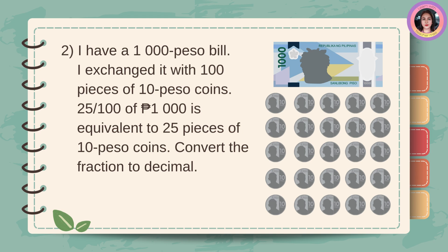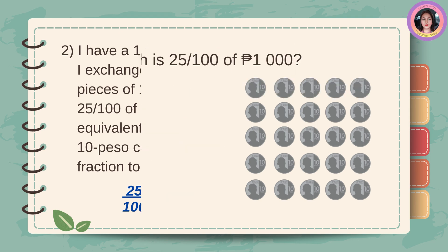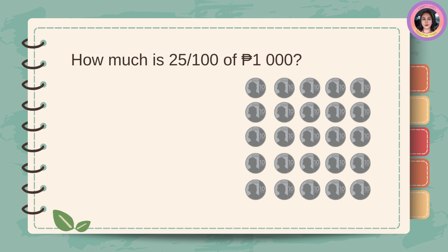Number two: I have a 1,000 peso bill. I exchanged it with 100 pieces of 10 peso coins. Twenty-five hundredths of 1,000 pesos is equivalent to 25 pieces of 10 peso coins. Convert the fraction to decimal. Twenty-five hundredths is equal to 0.25 or 25 hundredths. How much is twenty-five hundredths of 1,000 pesos?